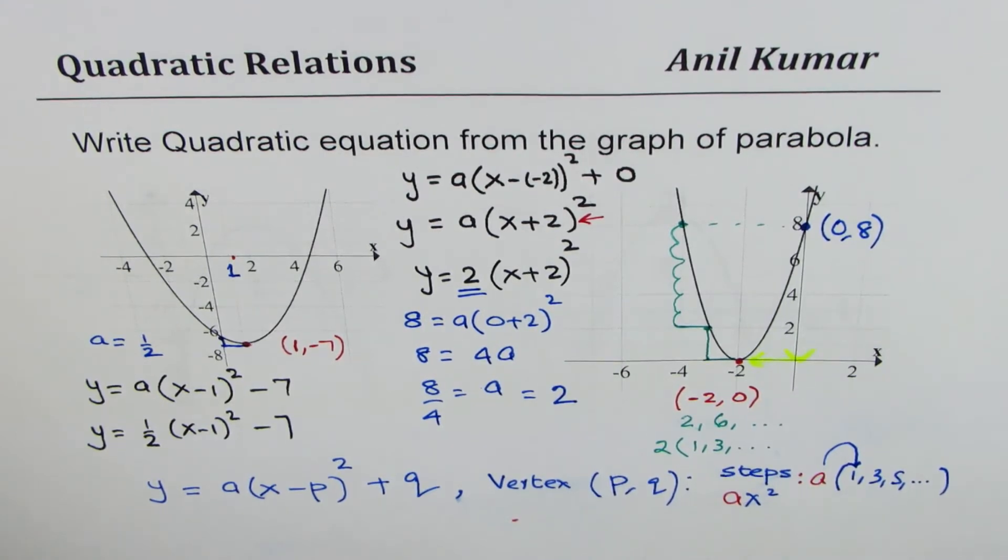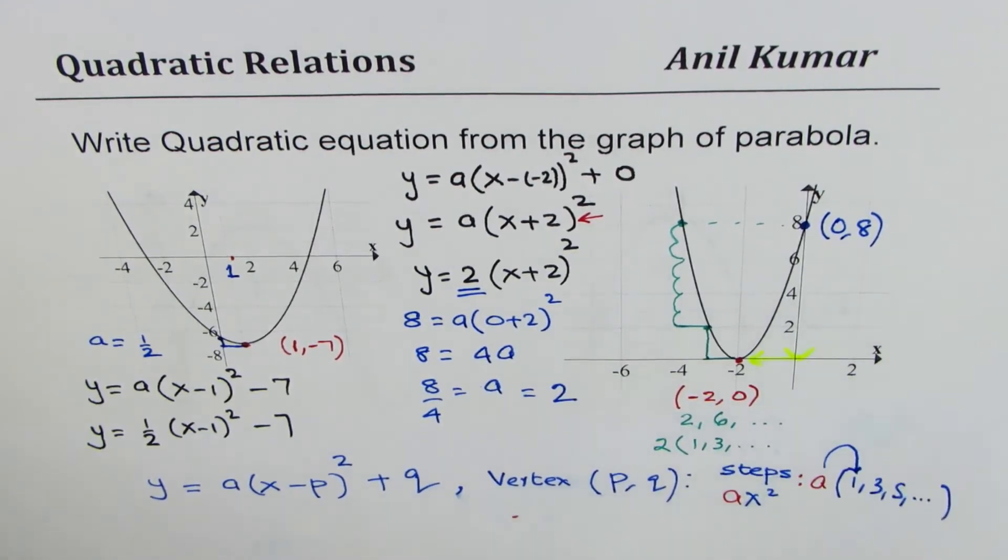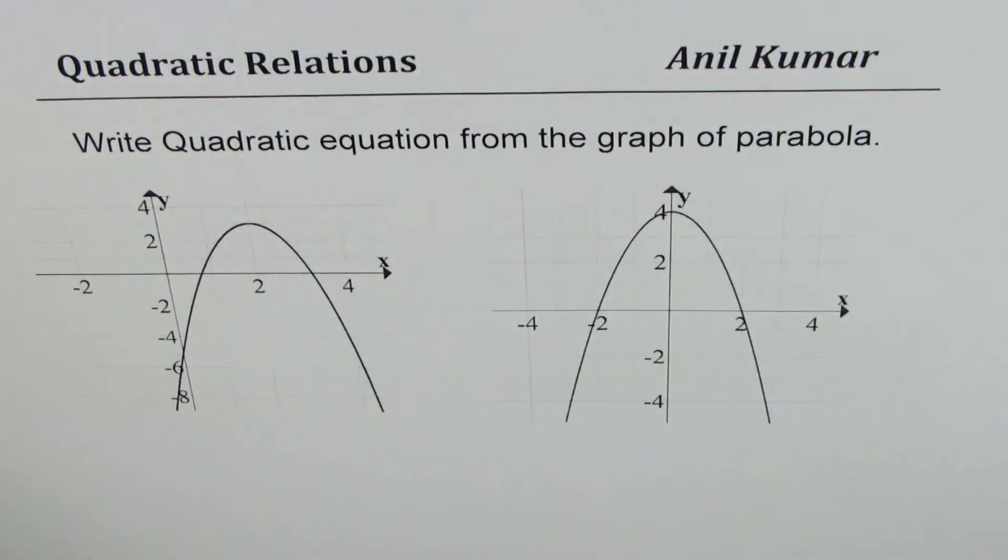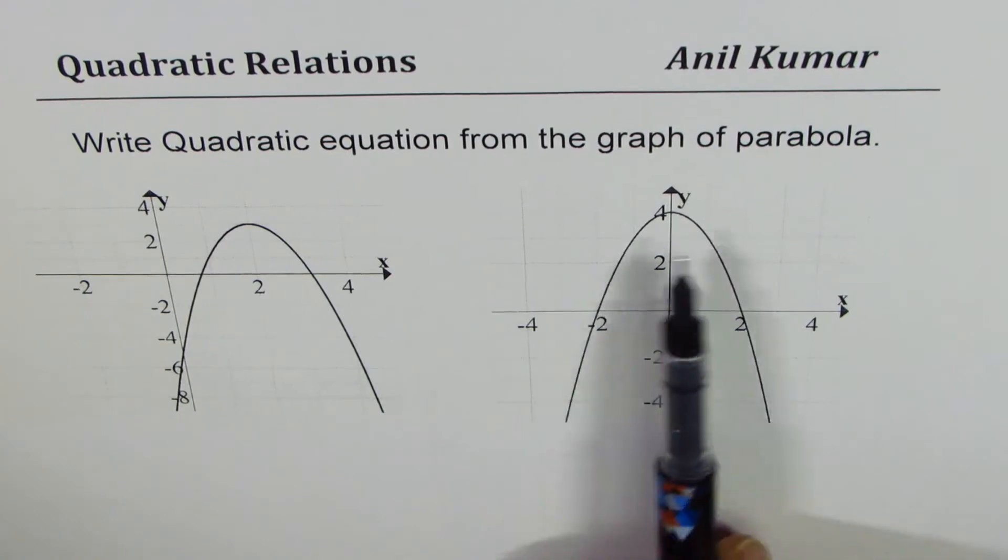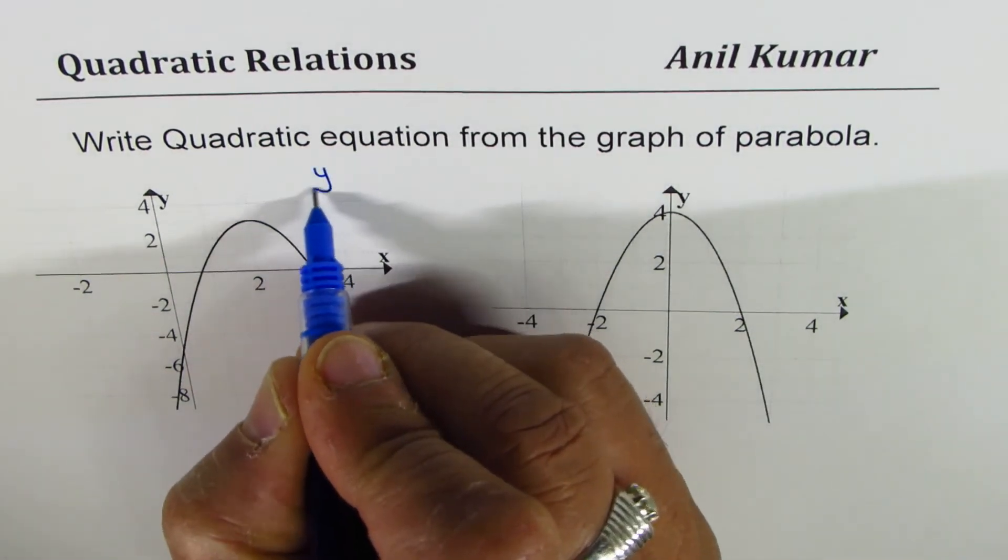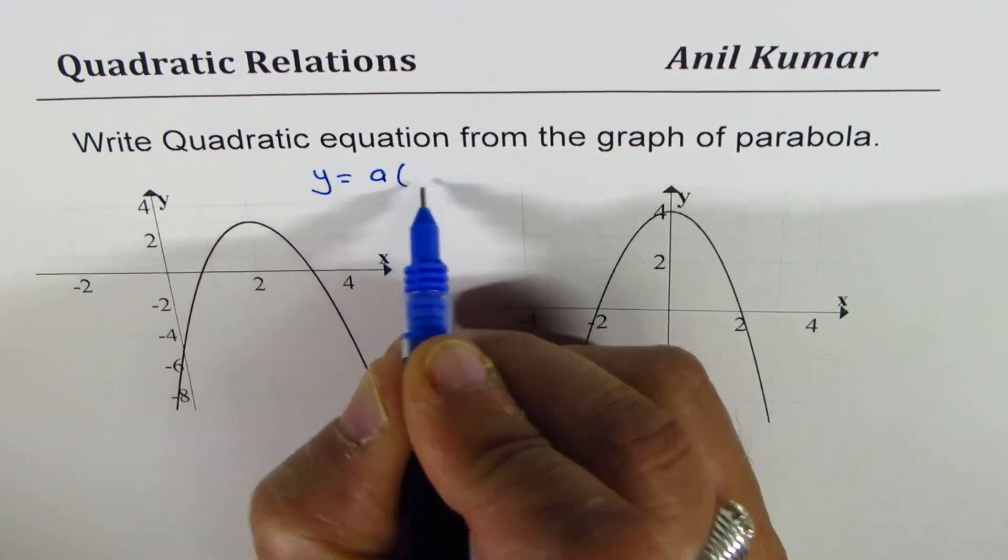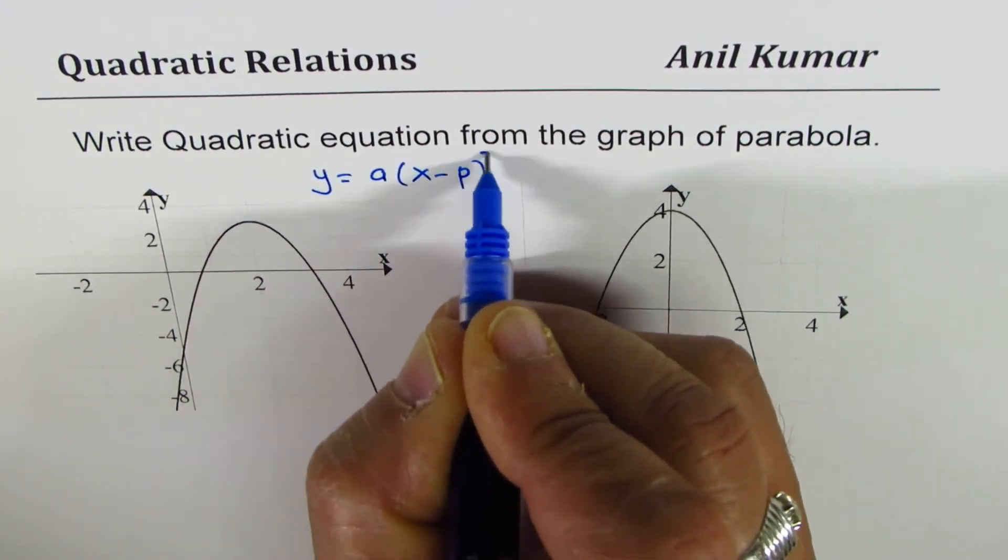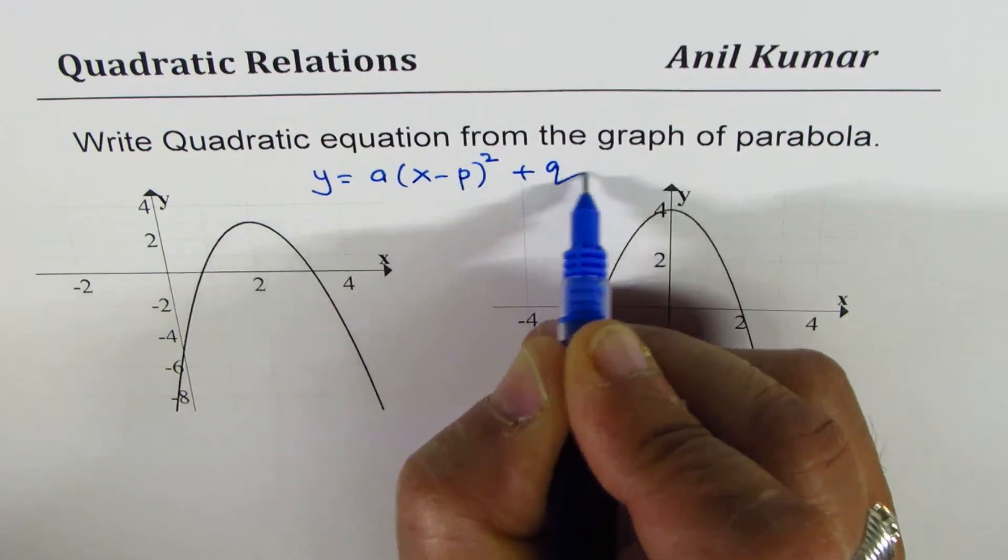I hope you appreciate this part, and since both are opening up, the value of a is positive. Now the two graphs I'm discussing are parabolas which open downwards, that means we are expecting a to be negative. So let's begin with the general form of our equation, which is y equals to a times x minus p whole square plus q.